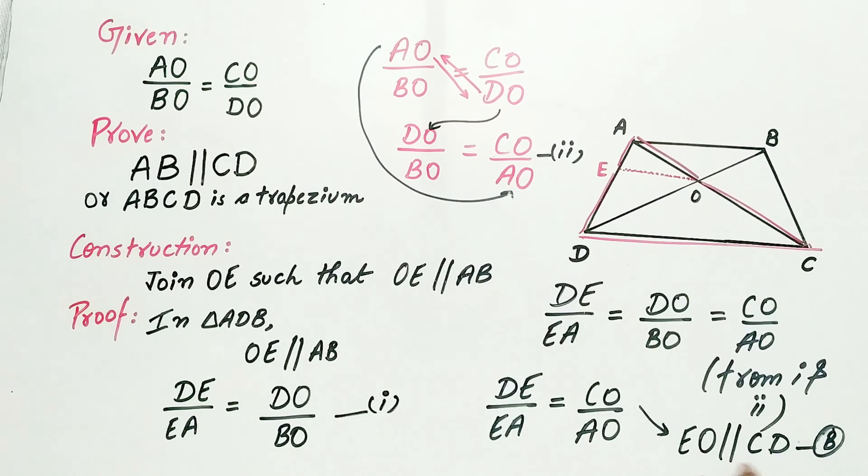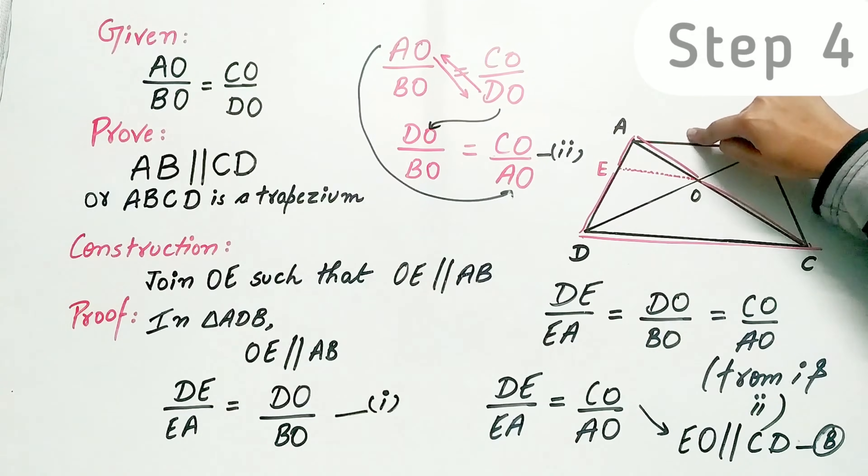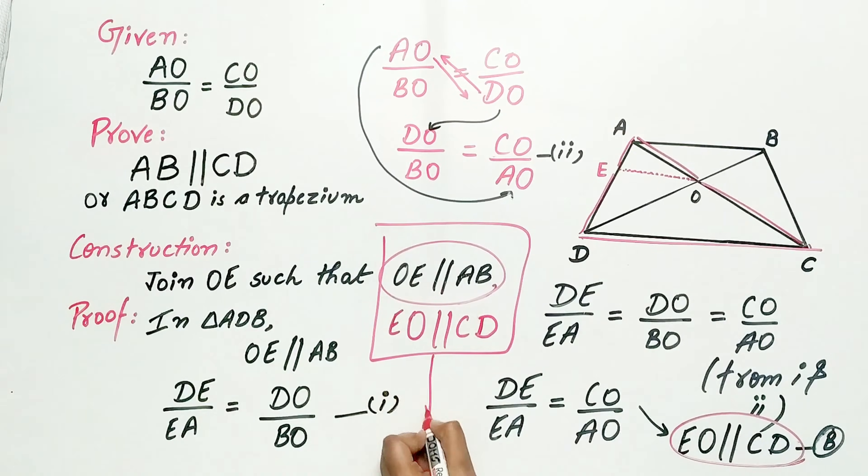Now, EO is parallel to CD and EO is parallel to AB by construction. So by these two equations, can I say AB is parallel to CD?